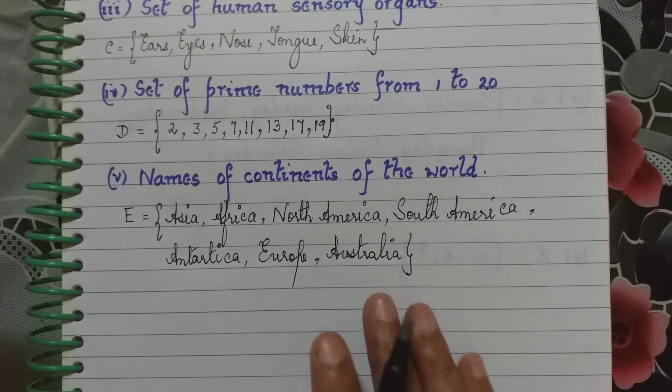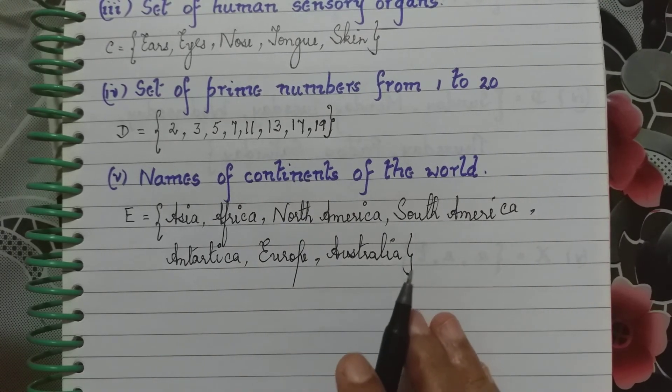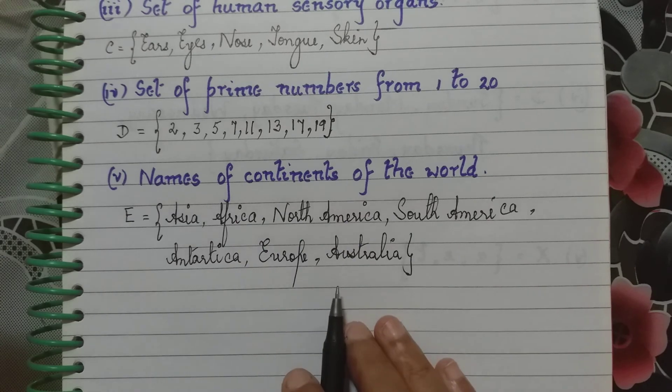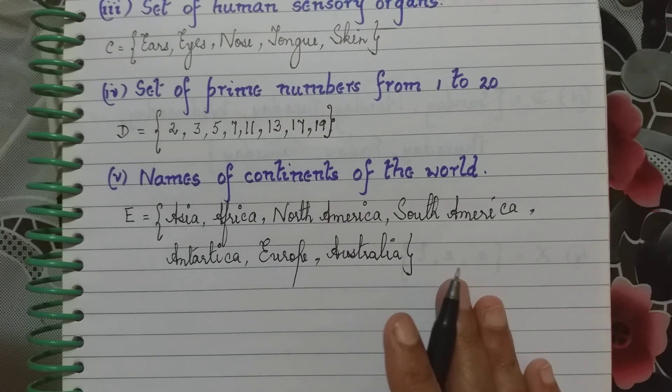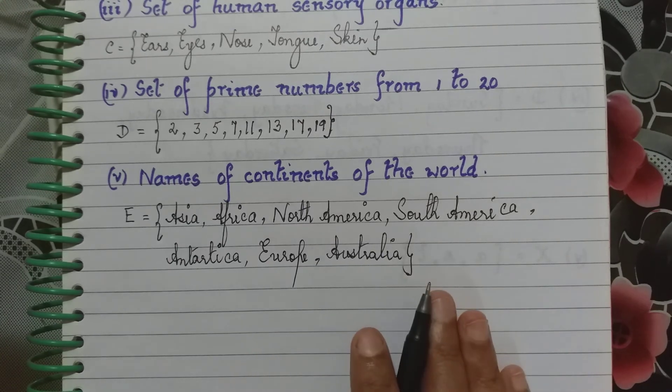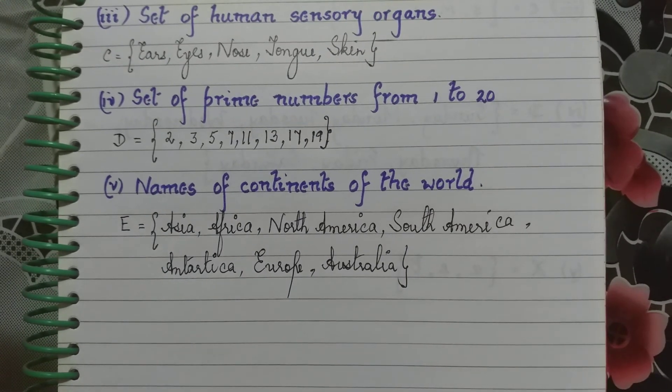Now we go to the last question of this practice set 1.1 where the set is given to us and then we convert it to the rule method. Here the set was given to us, we convert it in the listing method. The last question is the set is given to us, we convert it to the rule method.